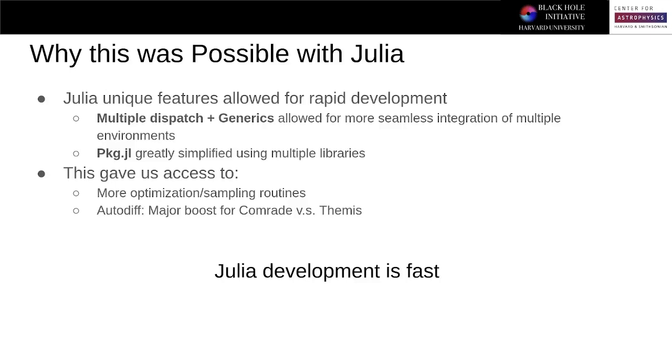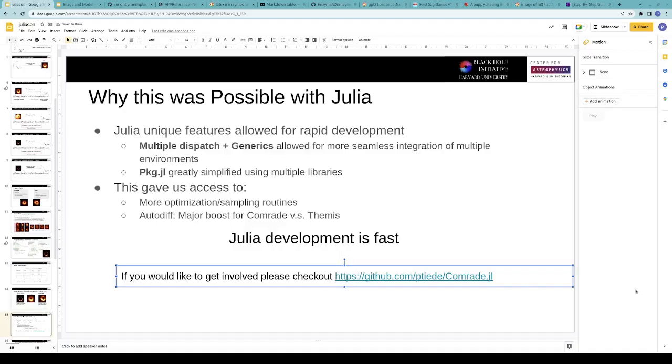And so what this really comes down to is that while Julia emits very fast code, it also emits very fast development and prototyping. All right, thank you.